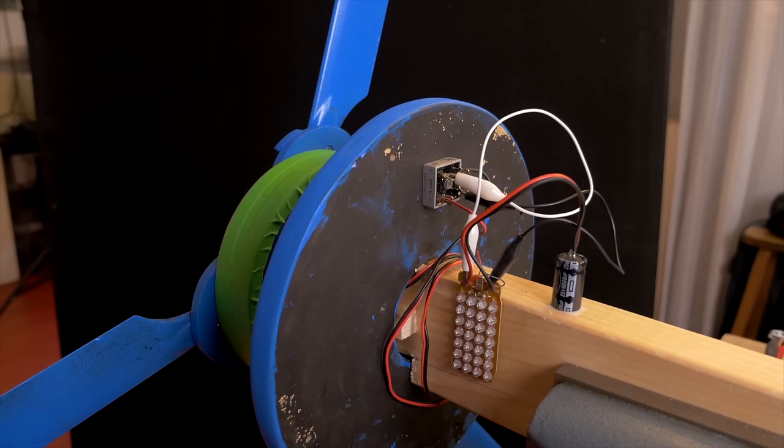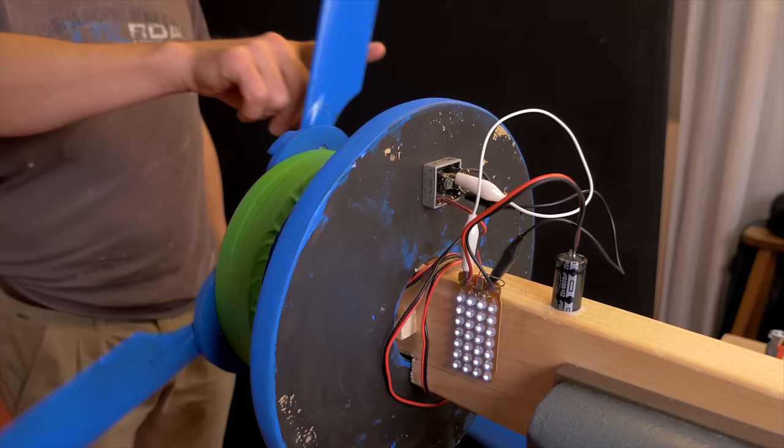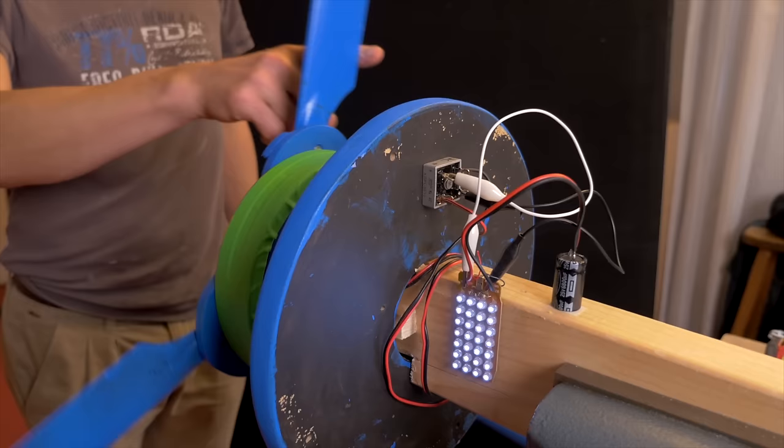Placing a capacitor on the DC output of the rectifier is like placing a large room for the electrons to gather in, resulting in a more steady flow towards the LEDs. As you can see, it's more steady, but the voltage level is still all over the scale.